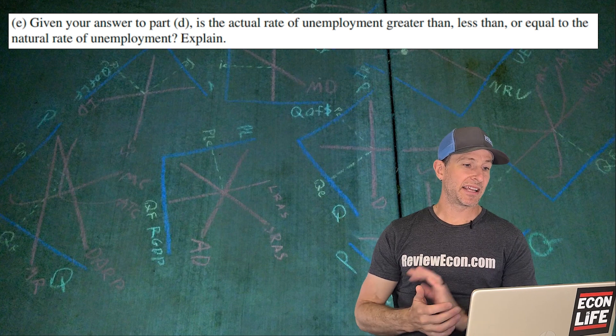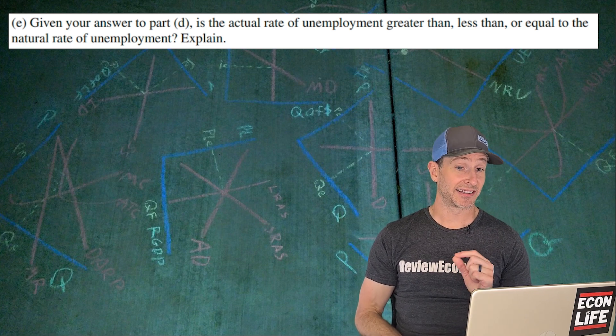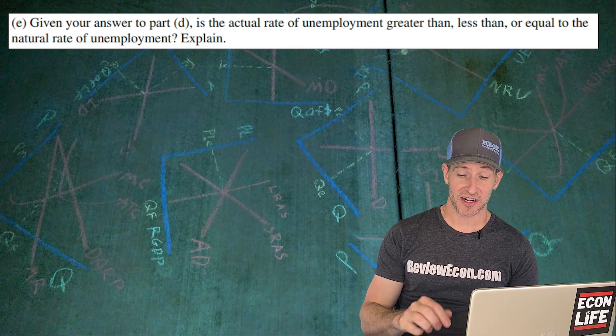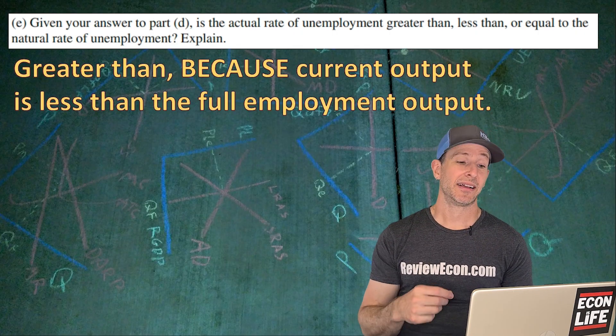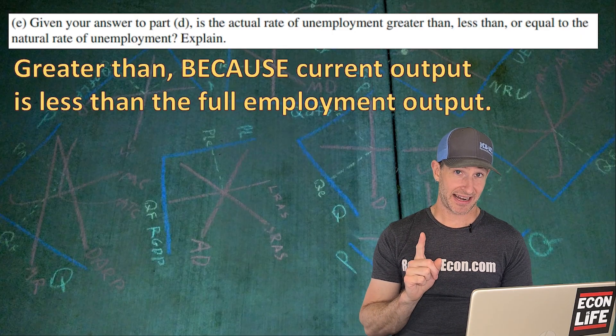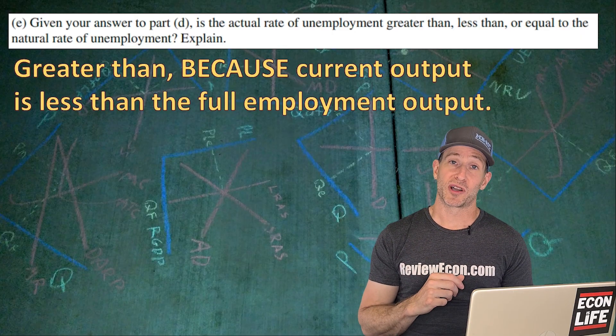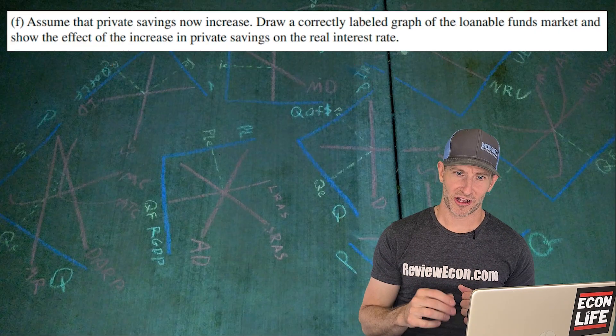Next for E, given our answer in part D, is the actual rate of unemployment greater than, less than, or equal to the natural rate of unemployment. We have to explain here. So it is greater than, and that's because our current output is still, even after that AD shift, less than the full employment output. That means we have some cyclical unemployment.